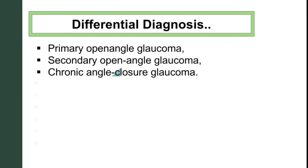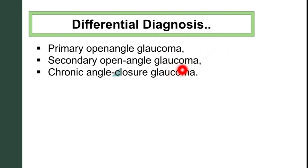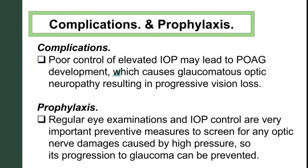For differential diagnosis, you need to differentiate ocular hypertension from primary open-angle glaucoma — a link to that video is available. You should also differentiate it from secondary open-angle glaucoma and chronic angle-closure glaucoma.